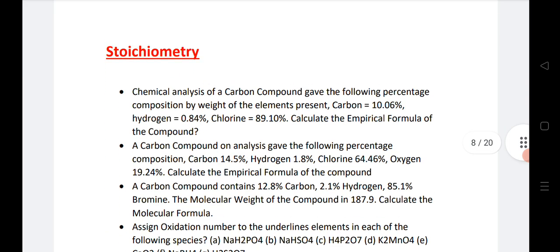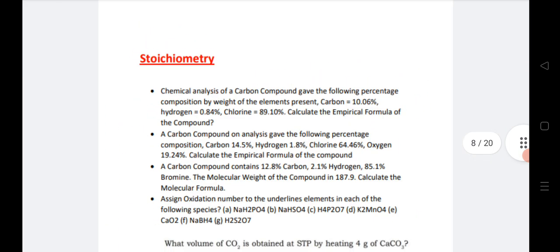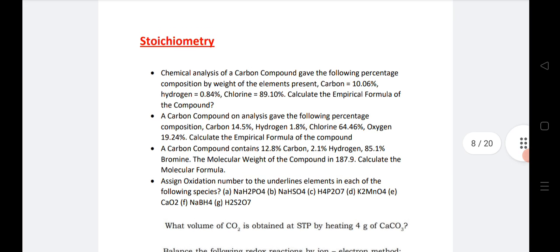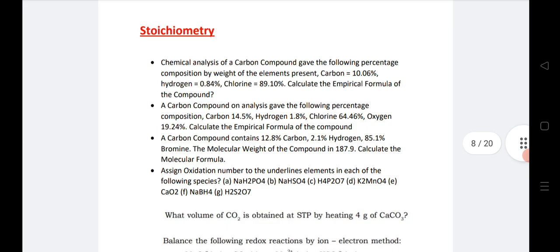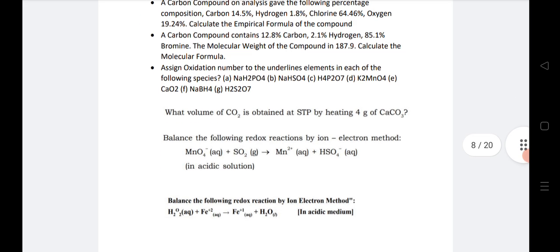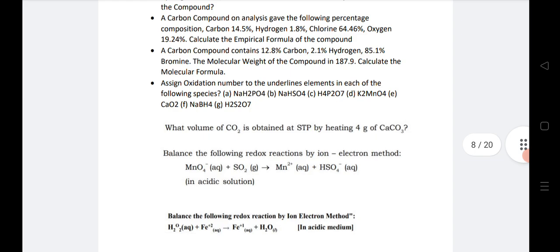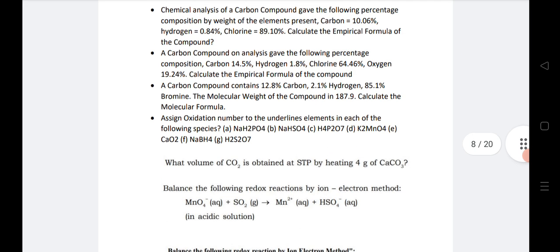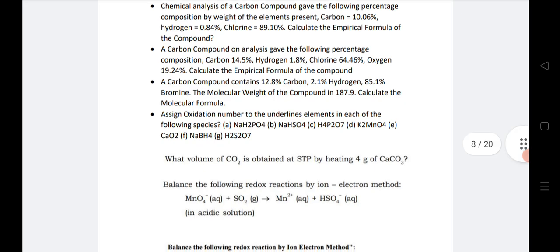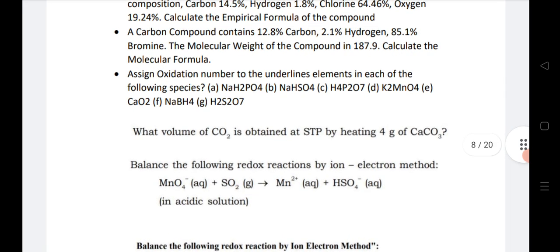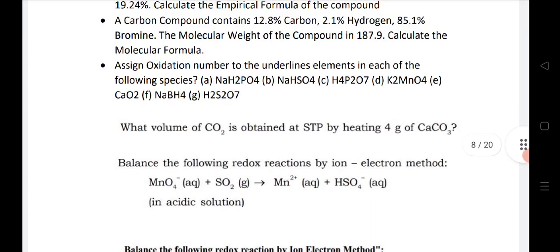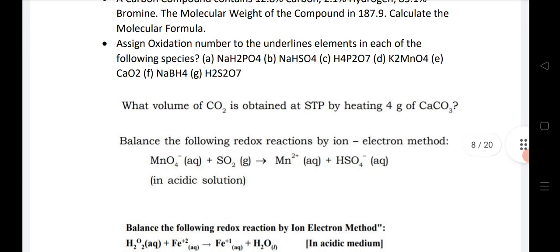Next is stoichiometry. This year 2 SAQ questions will come from stoichiometry. Normally they will ask empirical formula, molecular formula question 1, and another one they will ask the redox reactions, electron exchange method, acidic medium and basic medium. The question 'what volume of CO2 is obtained at STP by heating 4 grams CaCO3' is a very important question. Balancing the redox is also a very important question. These two questions are also given in the model paper, so practice this, don't leave these two questions.